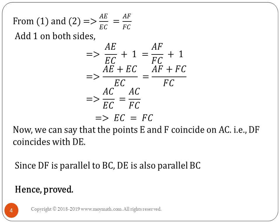From here we can say that the points E and F coincide on AC. That means DF coincides with DE, meaning they are the same line. As per our construction, we have already taken that F is another point, so DF is parallel to BC as per assumption. We can see that DE is also parallel to BC because they are coinciding lines.